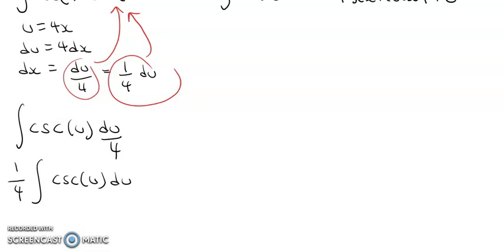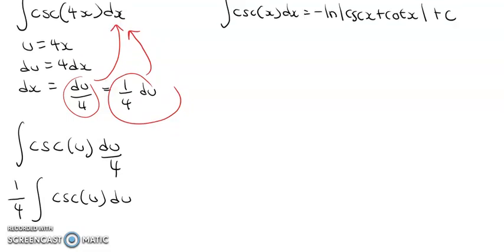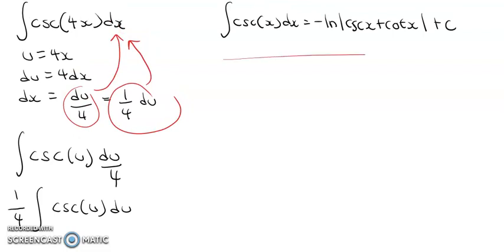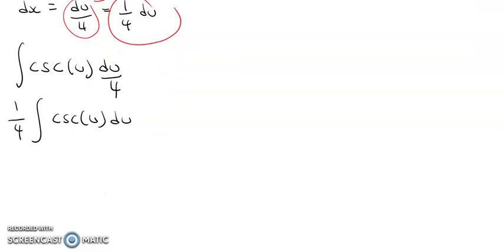Now that we have this cosecant u du, we can use the formula that we mentioned over here. So that's what we're going to do, keeping in mind that our 1 over 4 needs to stay outside of it. So we have negative ln, and then we have the absolute value of cosecant u plus cotangent u, and then plus c.